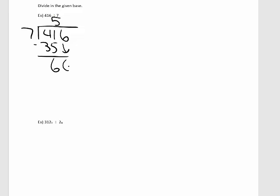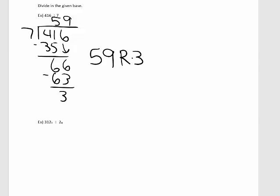Bring down the next number, that's a 6. 7 goes into 66 nine times. 9 times 7 is 63. Subtract, and that's 3. So we can write that as 59 with a remainder of 3.